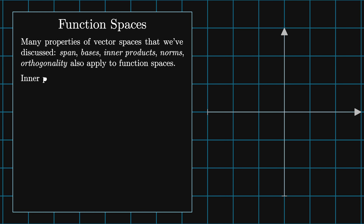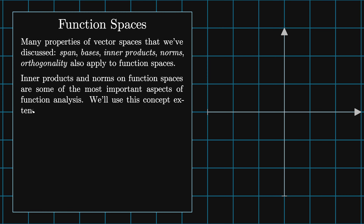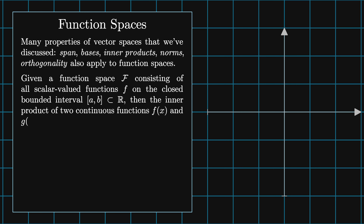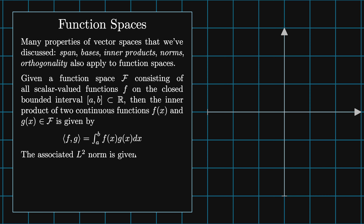Inner products and norms on function spaces are some of the most important aspects of functional analysis, and we'll use this concept extensively when we explore PDEs. Given a function space f consisting of all scalar valued functions f on a closed bounded interval a through b, the inner product of two continuous functions f and g in f is given by the integral from a to b of f of x times g of x dx. The associated L2 norm is given by the magnitude of f equals the square root of the integral from a to b of f of x squared dx.